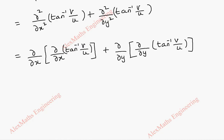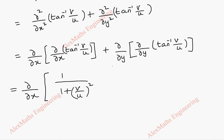For the first part, the outer dou by dou x is written as it is. The derivative of tan inverse v by u is 1 by 1 plus (v by u) whole squared. By chain rule, we evaluate v by u using the quotient rule: numerator derivative vx times u, minus v times denominator derivative ux, all divided by denominator squared. So we completed the first derivative using the chain rule.